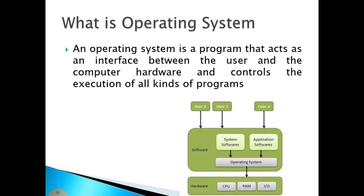Application software includes things we commonly install, like Microsoft Office, PowerPoint, Excel, and VLC Media Player. The topmost layer belongs to the user. A multi-user operating system allows multiple users to access the system, and a multitasking operating system allows multiple tasks to be executed simultaneously.